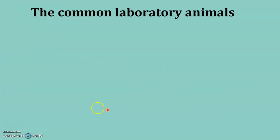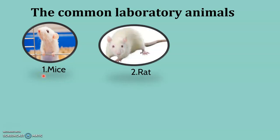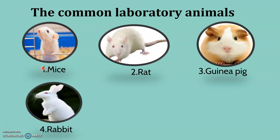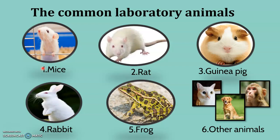Now let us discuss the different animals — the list of animals. Number 1 is mice. We use mice to check CNS activities — psychotic, anti-psychotic, anxiety, anti-anxiety, and depressant effects. That is mice. Number 2 is the rat, also called albino rat — mice is also called albino mice. Number 3 is guinea pig. Number 4 is rabbit. Number 5 is frog. Number 6 is other animals like cat, dog, and monkey. These are the six different categories or species of animals.